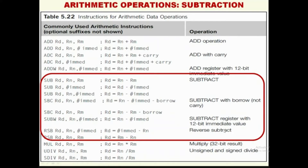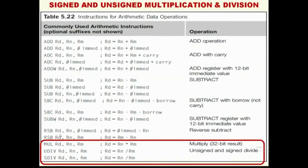RSB means reverse subtraction, where the result is immediate - RN = RD, or RM - RN = RD. It is something like performing a ones complement or negation — instead of RN minus the immediate constant, it is the immediate constant minus RN. Instead of RN - RM, the reverse subtraction computes RM - RN.